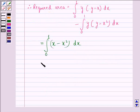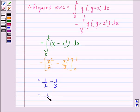Which is further equal to x square by 2 minus x cube by 3 where the limit goes from 0 to 1. This equals 1 by 2 minus 1 by 3, which equals 1 upon 6 square units.